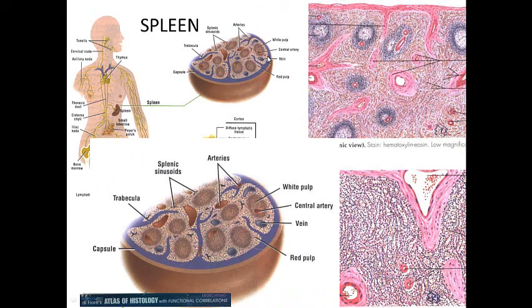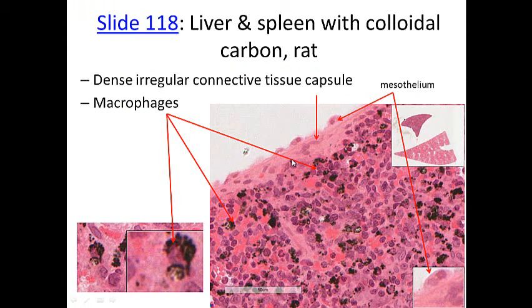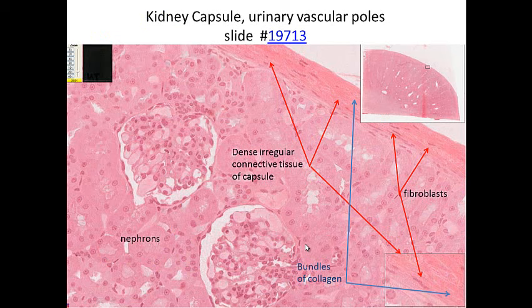Looking at organs — here's the spleen. It has dense irregular connective tissue surrounding it in the capsule, and trabeculae that project inward, which are also connective tissue. In the spleen capsule you can see lots of fibers running in different directions. We'll also learn about reticular fibers, which are branched fibers that form a mesh for cells to percolate through. Here we can see the mesothelium — the epithelium on the surface — below which is the capsule. These are fibroblasts in a dense irregular connective tissue. Macrophages are also present, which we'll discuss later.